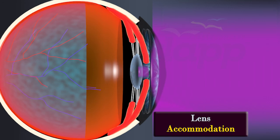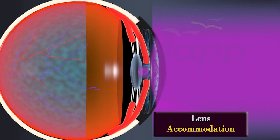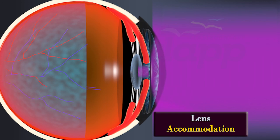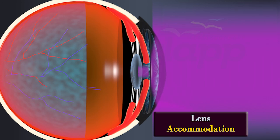The lens is a flexible, transparent structure that changes shape to focus light onto the retina. This process is called accommodation. The shape of the lens is adjusted by the ciliary muscles surrounding it.